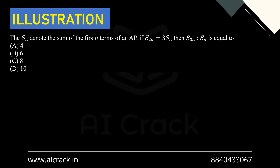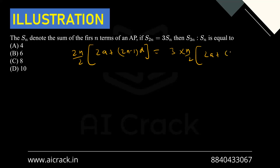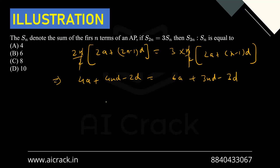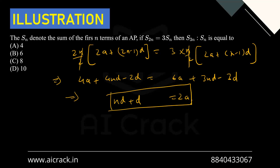Next question: if Sn denotes the sum of the first n terms of an AP and S2n = 3·Sn, then find S3n / S2n. Given S2n = 3·Sn, write out S2n = (2n/2)[2a + (2n-1)d] and Sn = (n/2)[2a + (n-1)d]. Cancelling n/2, we get 4a + 4nd - 2d = 6a + 3nd - 3d. Solving this, we arrive at 2a = 2nd + d, which is our key relation.